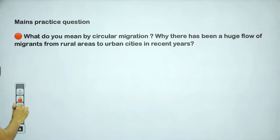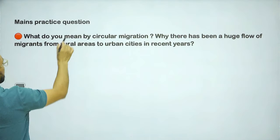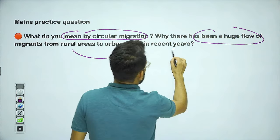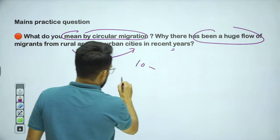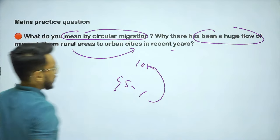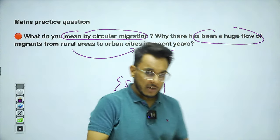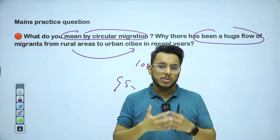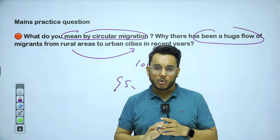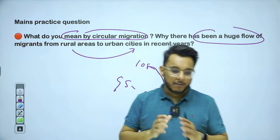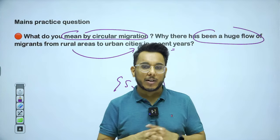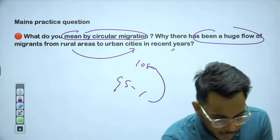Maldives is an important location in the Indo-Pacific and both India and western countries like the US have significant interest there. We will watch how the new president's foreign policy develops. The main practice question for today: 'What do you mean by circular migration? Why has there been a huge flow of migrants from rural areas to urban cities in recent years?' — this will be a GS Paper 1 marker question. Please download the Synoptic Notes and follow them. I hope you found value in today's session. We'll meet tomorrow — please take care.